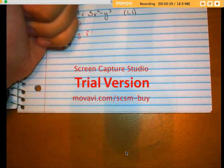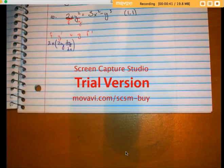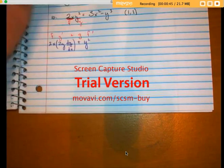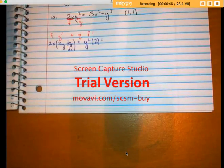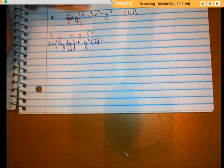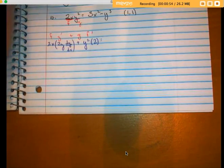G is y squared and f prime is just 2. I don't write dx because that's just, or the derivative of x because that's just 1.